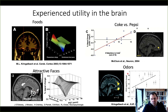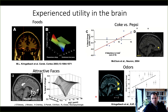Finally, when we talk about odors, subjective pleasantness ratings — ranging from relatively pleasant to relatively unpleasant — show that the BOLD signal change in both ventromedial and dorsomedial prefrontal cortex correlates quite nicely with these pleasantness ratings. This implicates the orbitofrontal cortex across a number of stimulus types in reflecting or processing experienced utility within the brain.